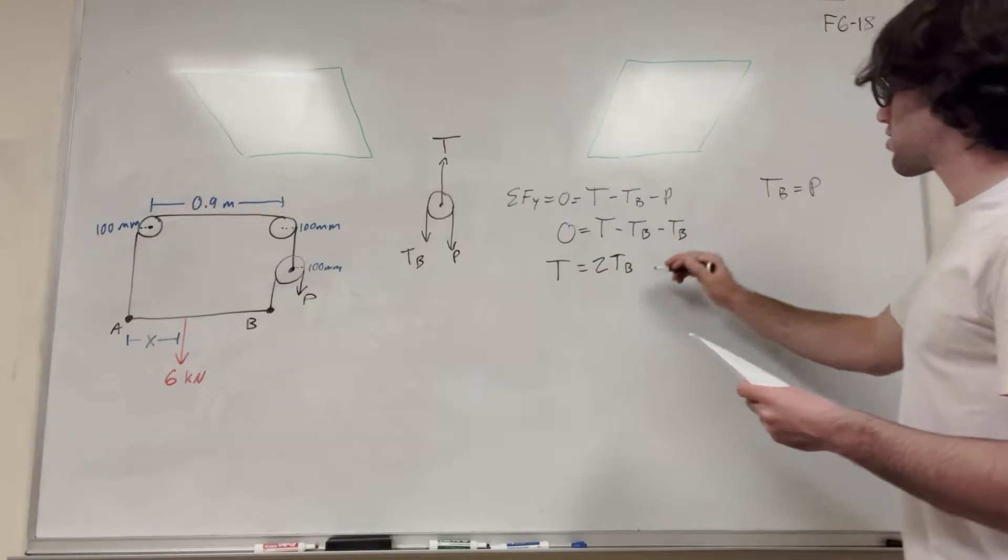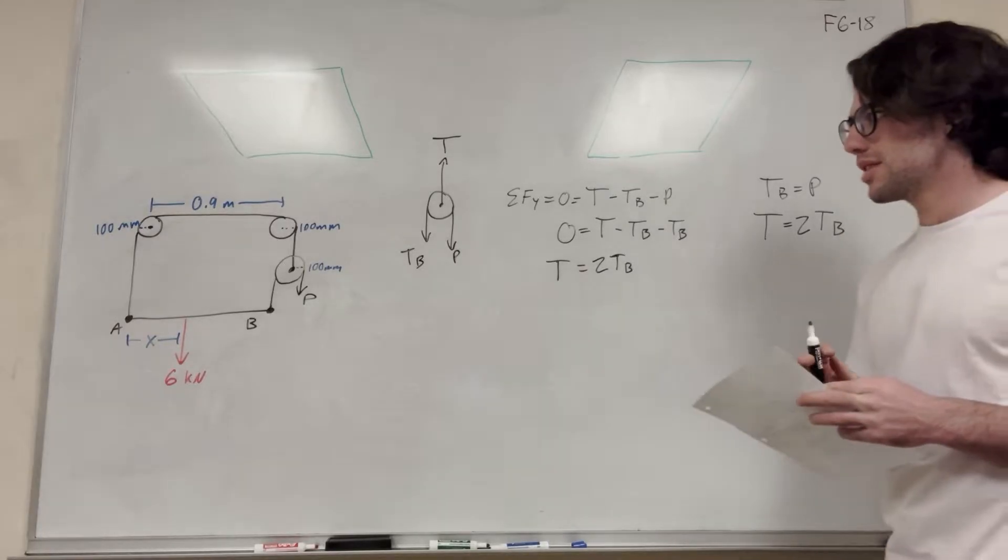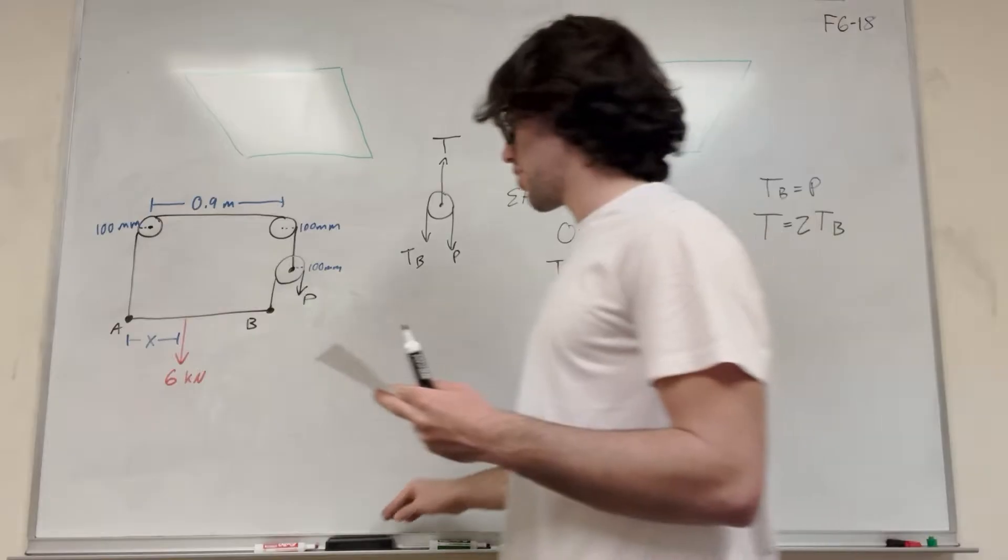So then we can say that we know that T is equal to 2 times tension of B. So this is going to be a useful thing we have. So let's write this over here. T is equal to 2 tension in B. Okay, so that's how we did this part. So let's go ahead and do another one.